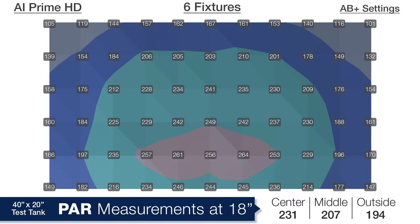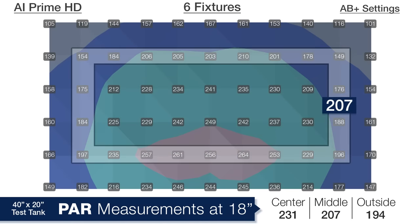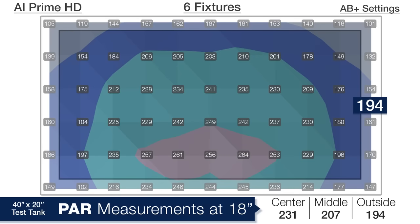At a depth of 18 inches the six modules are now producing 231 in the center, 207 in the middle ring, and 194 on the outside.